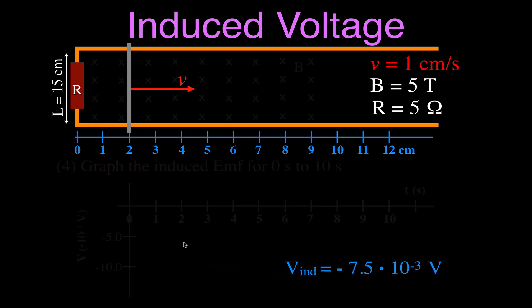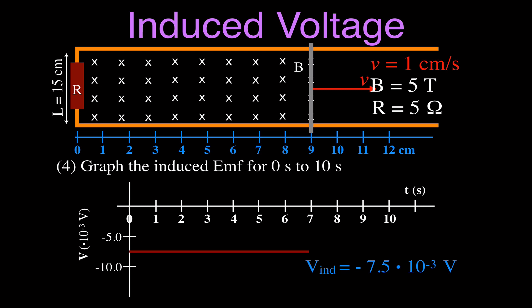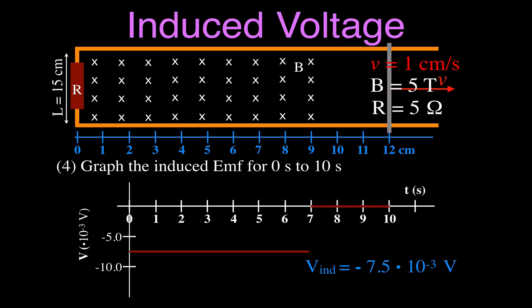Now we're going to graph the induced voltage. It only changes for the first 7 seconds, so we start at minus 7.5 times 10 to the minus 3. The induced voltage is a constant voltage because the flux is changing at a constant rate, which produces a constant induced voltage. Then once we get out of the magnetic field after 7 seconds, the induced voltage goes back to zero. So this is generally going to be a horizontal straight line, and then it goes right back to zero.